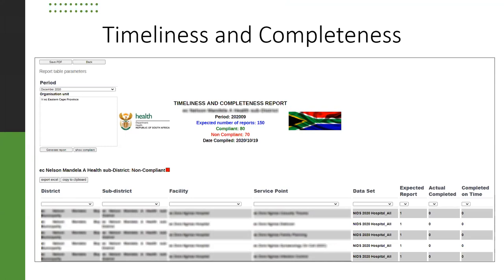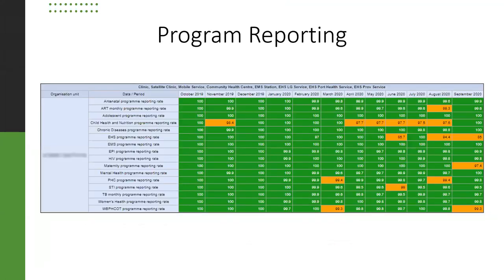This is an example of the program reporting rate on the data quality dashboard. You can see that the levels of program reporting completeness are pretty high. Our standard is that we expect 99.5% completeness of that particular proxy data element, and if any province has less than that, they are highlighted for action.